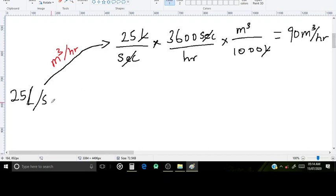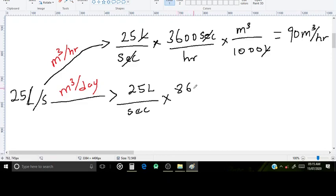Next we are going to convert to cubic meters per day. Similarly, we have 25 liters per second. In order to get rid of the seconds so that it becomes days, we multiply by 86,400 seconds over 1 day.